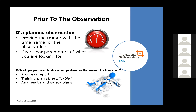Also give clear parameters of what you're looking for. It might be a general observation using the quality assurance matrix, or it might be that you're specifically looking at what was on the trainer's previous action plan to see whether they've developed those points. It might also be that as an organisation you've highlighted certain areas you wish to develop — perhaps areas on the QUIP — that you'll focus on during that observation. Just make sure you explain to the trainer what your expectations are.